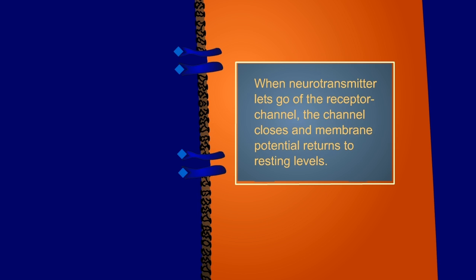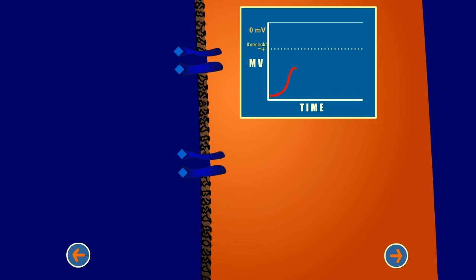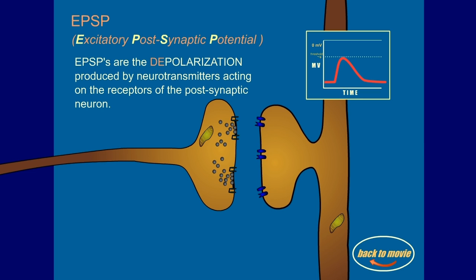When neurotransmitter lets go of the receptor channel, the channel closes, and membrane potential returns to resting level. The local depolarization is called an excitatory postsynaptic potential, or EPSP.